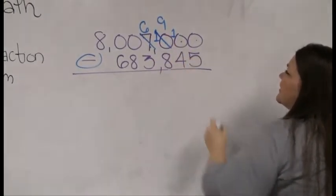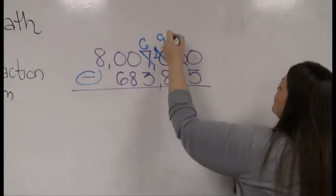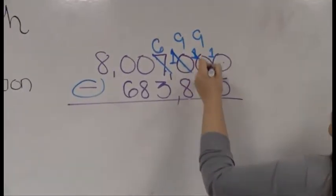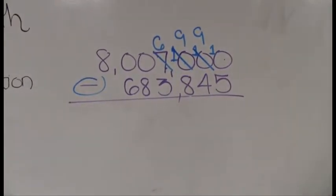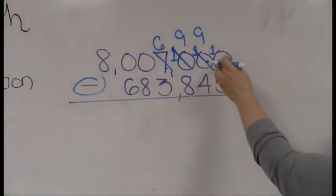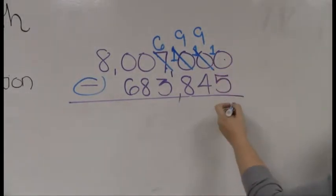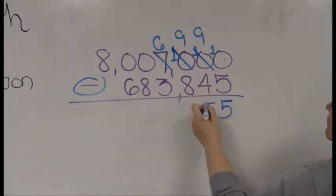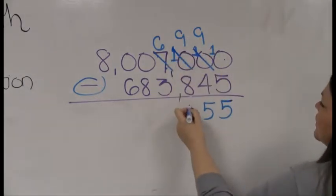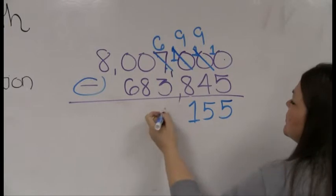Again the ten will go down to nine and this last guy will go up to ten. There we go. Now I can start subtracting. 10 minus 5 is 5, 9 minus 4 is 5, 9 minus 8 is 1, 6 minus 3 is 3.